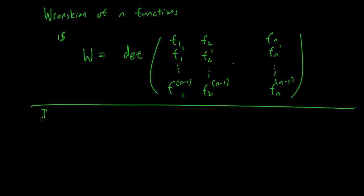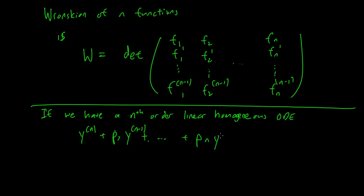If we have an nth order linear homogeneous ODE, that is one of this form: y to the nth plus p1 times y to the (n-1) plus... until pn times y equals 0, and these guys are all functions of x.